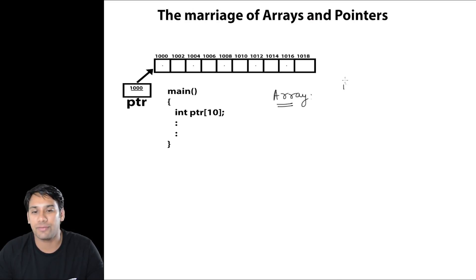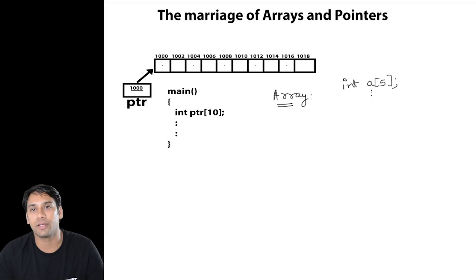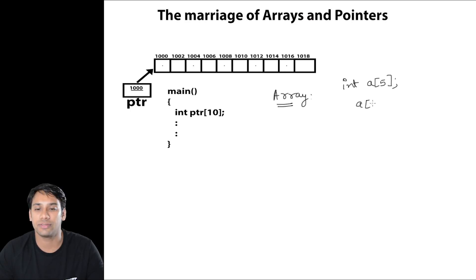For example, if I do int a[5], that means we will be given 5 continuous memory locations and all these continuous memory locations are of type integer. And we can access these memory locations — for example, if I do a[0] = 1, that means in index location 0, we will get the value 1.